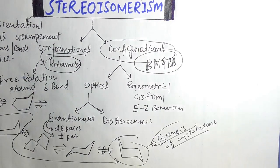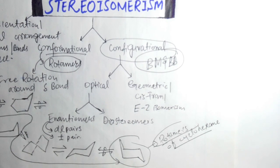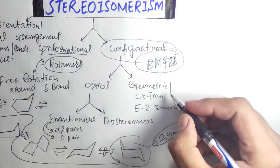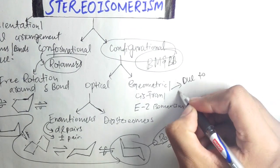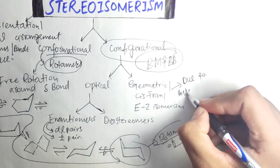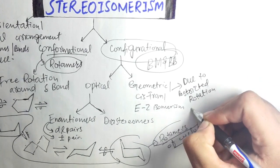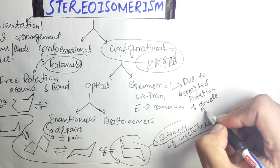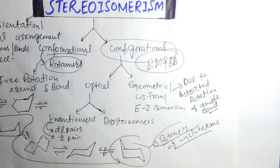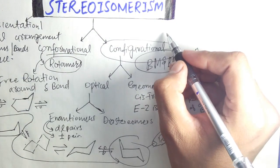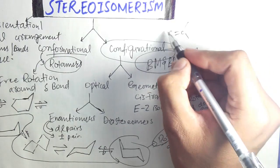Geometric isomerism: compounds having the same molecular formula, same structural formula, and same order of connectivity of atoms, but differing with respect to the 3D orientation of atoms and bonds in space due to the restricted rotation of a double bond. Such isomers are called cis-trans isomers, E-Z isomers, or geometric isomers. A good example is maleic acid and fumaric acid.